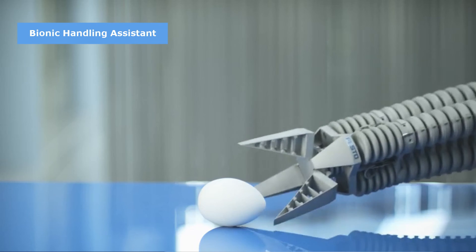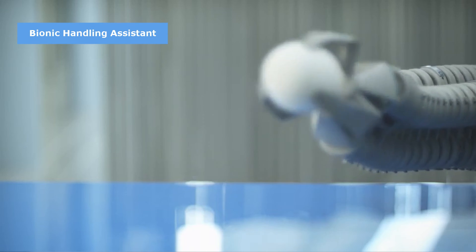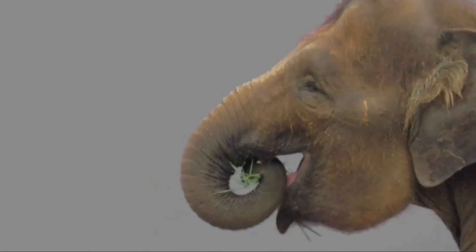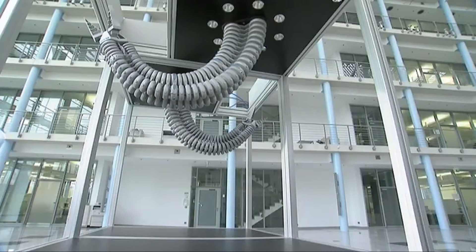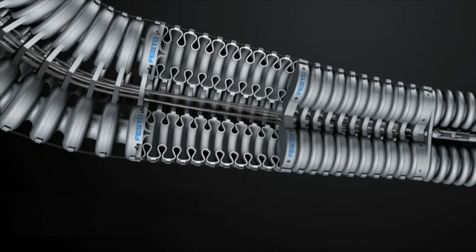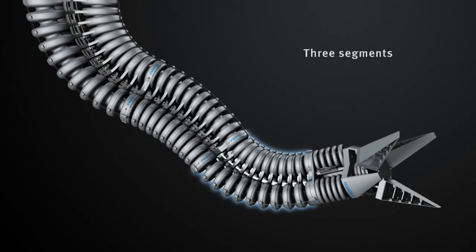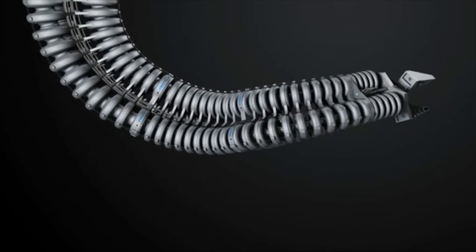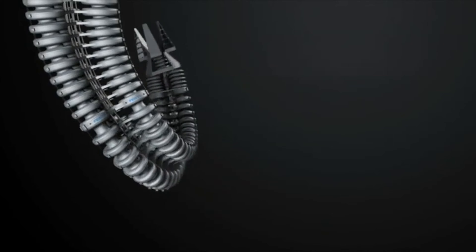Number 1. The Bionic Handling Assistant by Festo. Safe Human-Machine Interaction. Inspired by an elephant's trunk, a robotic arm is made by using plastic structures a bit like balloons, which are stacked one on top of the other and blown up with air, allowing the individual section to move. Several of these sections are then combined to make an arm that is as supple and flexible as an elephant's trunk.